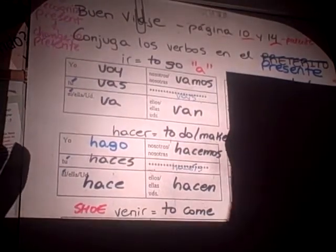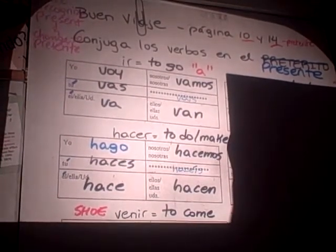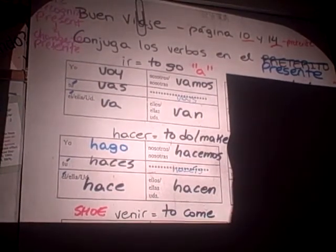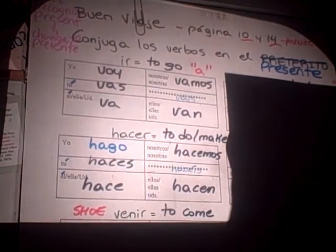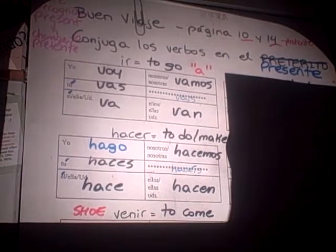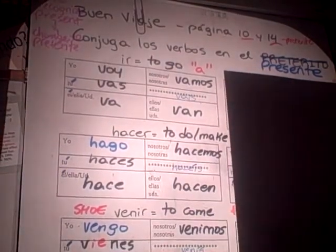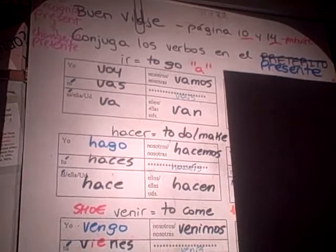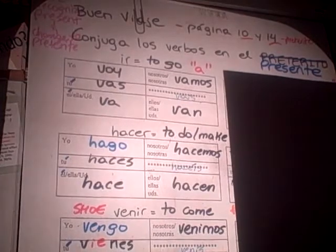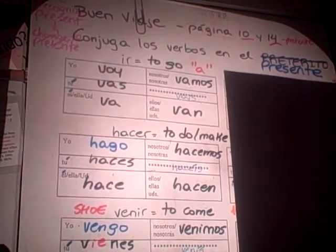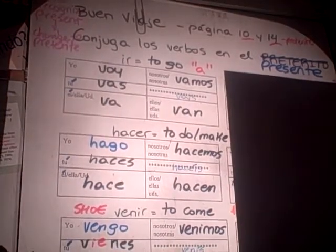For venir, what kind of change does it have? There's more than one. The first one is a g change, and the rest of them go from e to ie. So the first one is vengo, and then the rest of your shoe - inside the shape of the shoe - you change from e to ie.